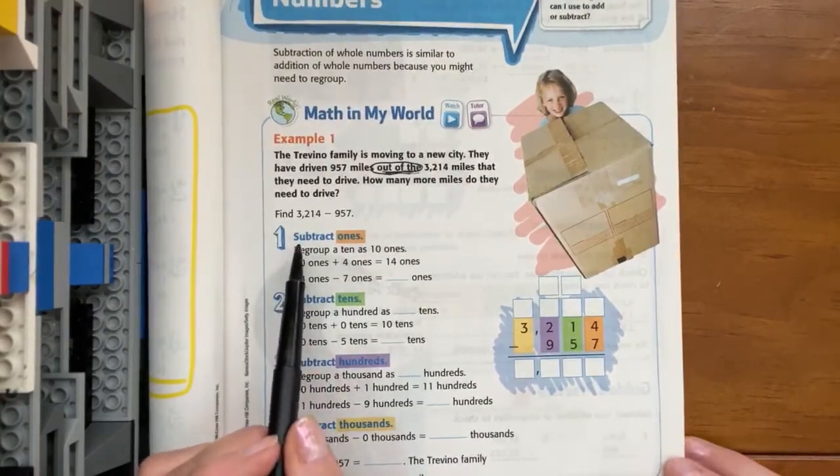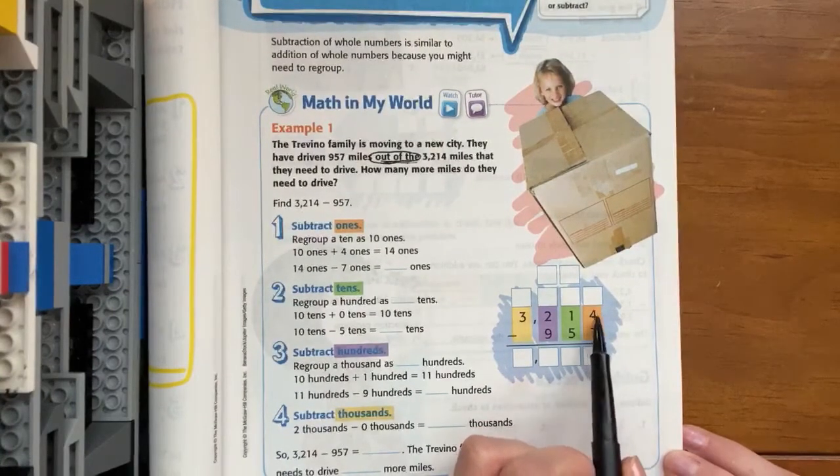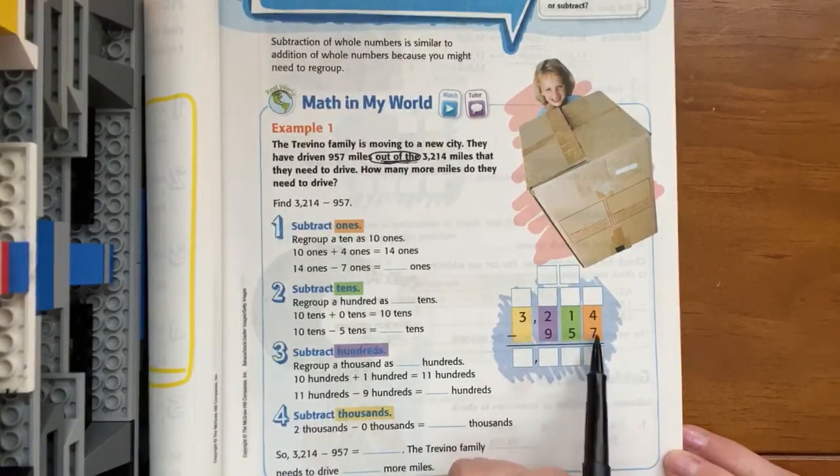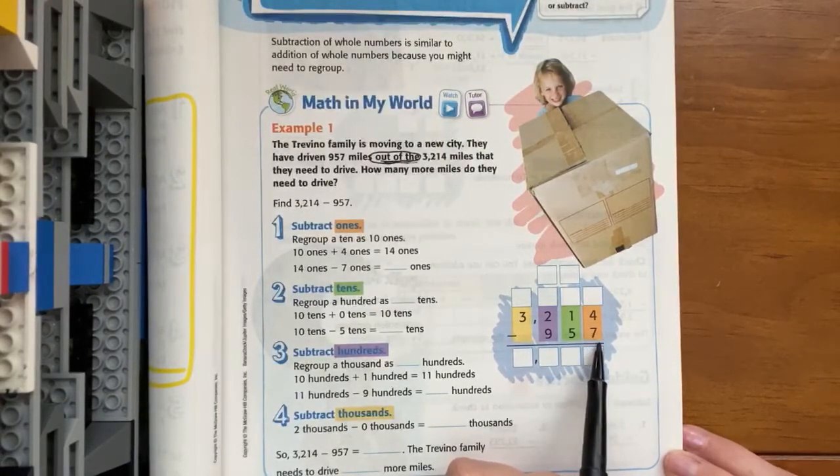It says we're going to subtract the ones. So let's come over here and evaluate. We have four ones and it tells us that we're going to subtract or take away seven. So if you have four, can you take seven away? No, you can't.